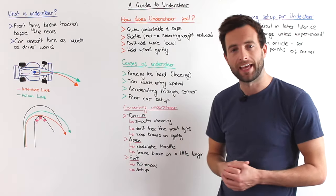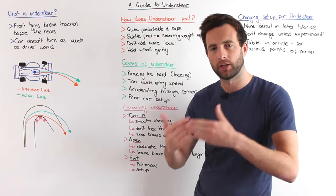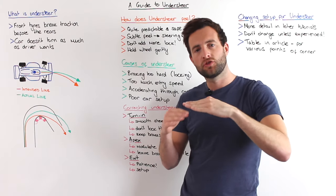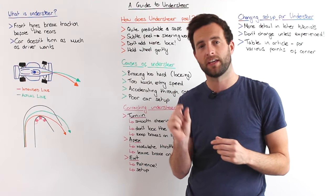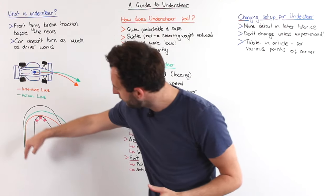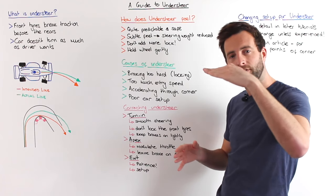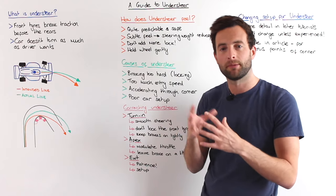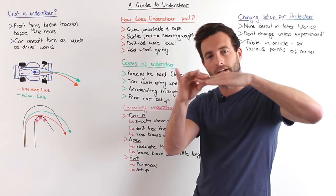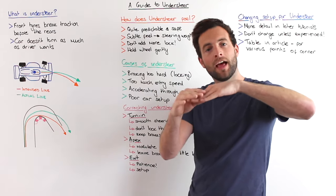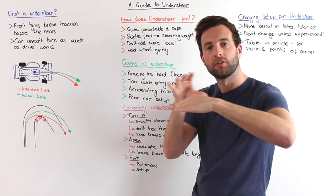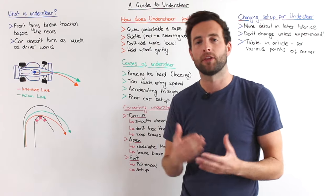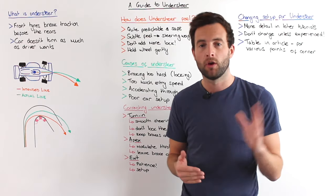Now let's look at correcting understeer approaching the apex. As you come in on the brakes the nose dives, then as you come off the brakes and turn in, just at the apex you re-engage the accelerator slightly and the rear sits down. In a longer corner, the rear sitting down can make the front light, causing understeer. In a longer corner, you actually have time to lift off the accelerator, which transfers grip to the front as the nose dives, helping the car turn and giving a better exit. However, you may not be able to eliminate understeer completely and a setup change may be needed.